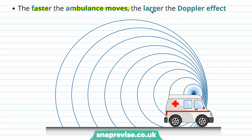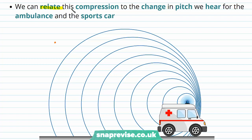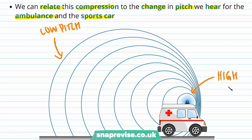The faster the ambulance moves the larger the Doppler effect. So if the ambulance is moving with a greater speed V we can see that on one side the wave fronts are more stretched out and on the other side they are more compressed. Behind the ambulance we have low pitch due to the stretched out wave fronts, and in front of the ambulance we have high pitch due to the compressed wave fronts.